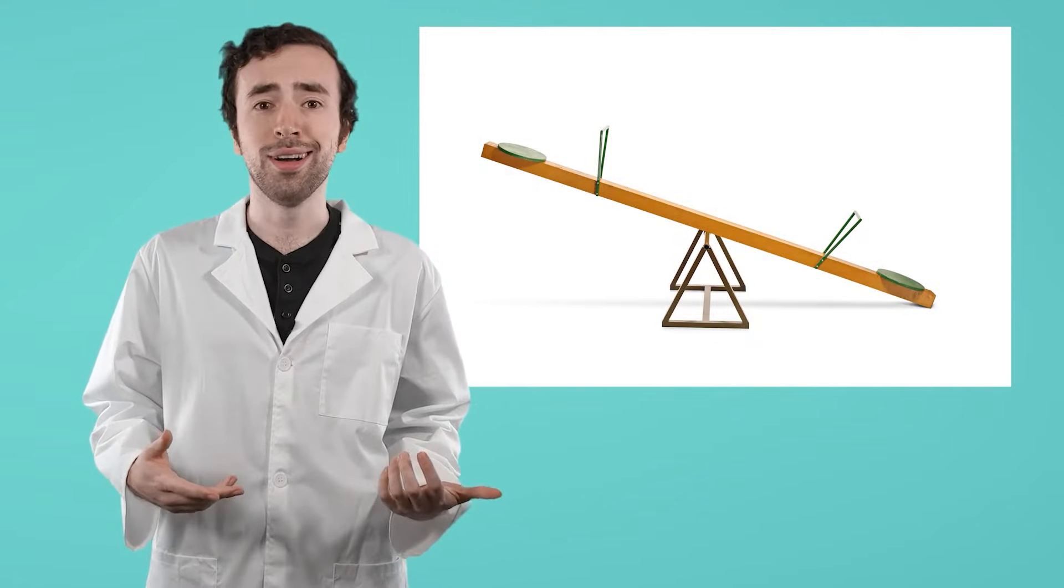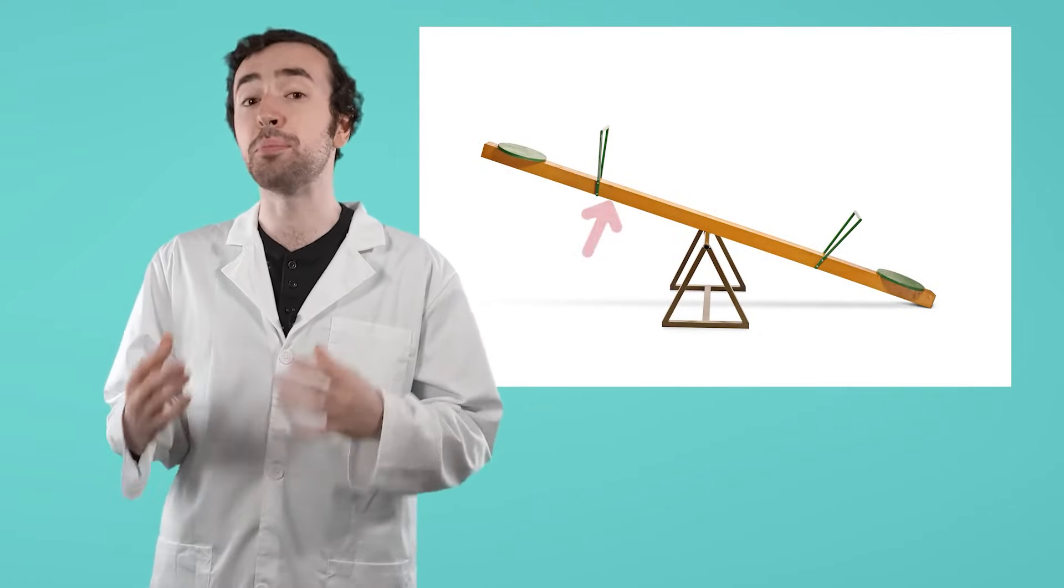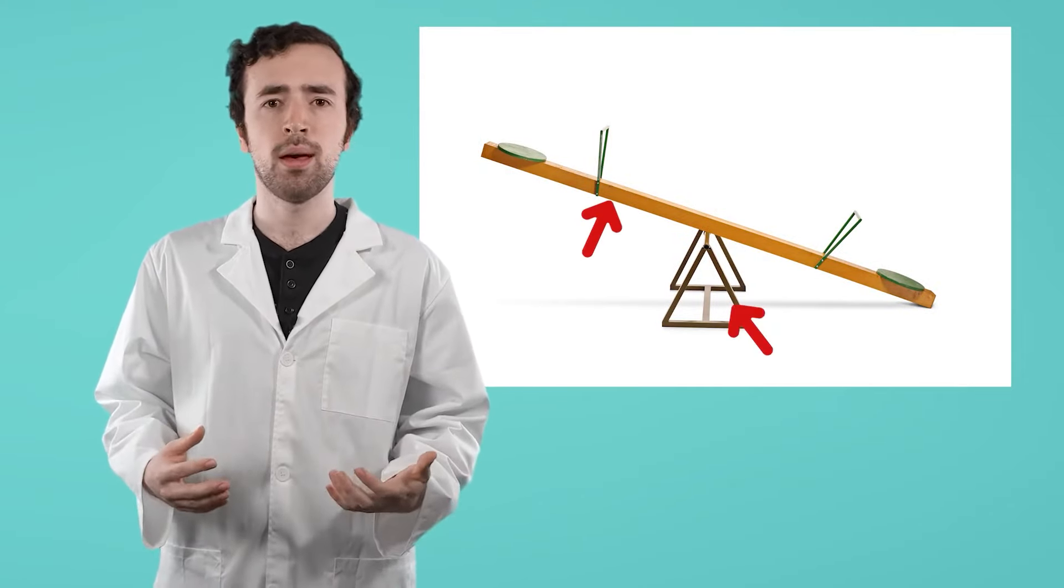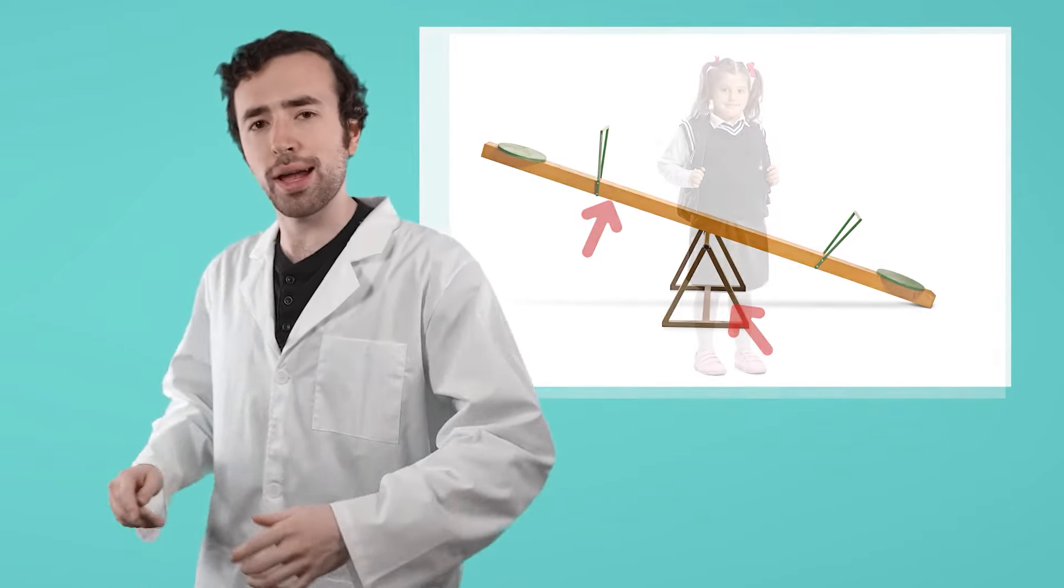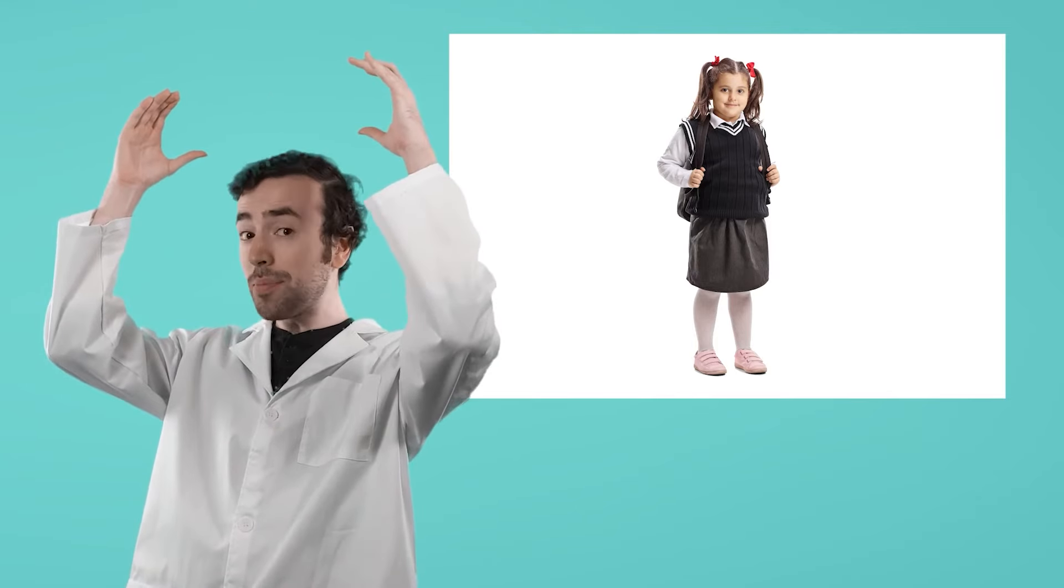A lever allows us to lift heavy objects, or loads, much easier. A great example of a lever that you're probably familiar with, especially if you've spent a lot of time on playgrounds, is a seesaw. A seesaw is a lever because it has a beam and a fulcrum. Imagine trying to pick up your friend and lift them over your head. You might be able to do it, but it would take a lot of effort, and you'd have to ask them nicely.